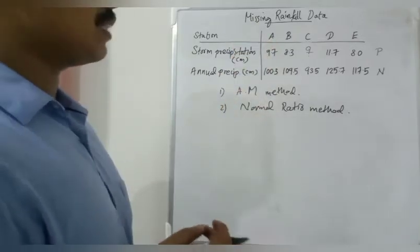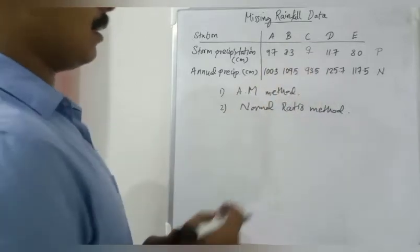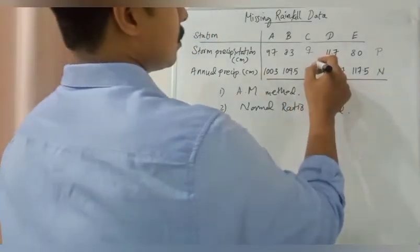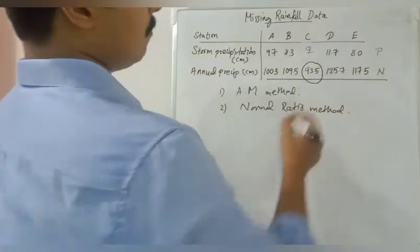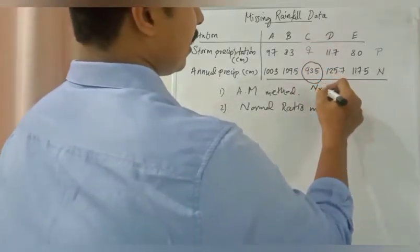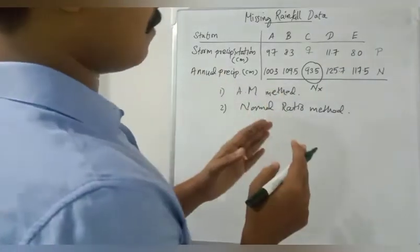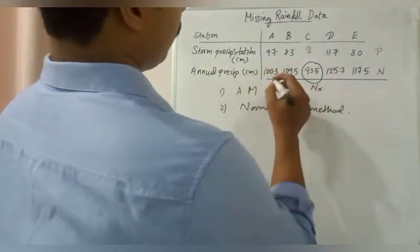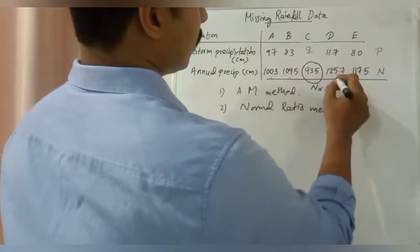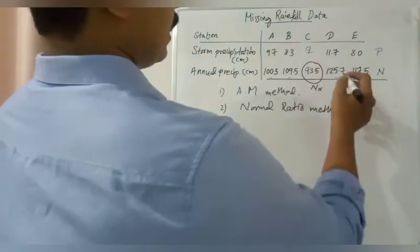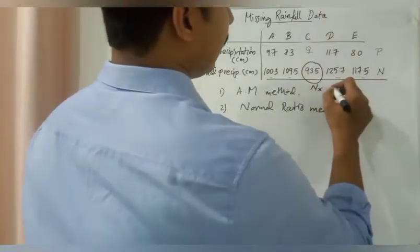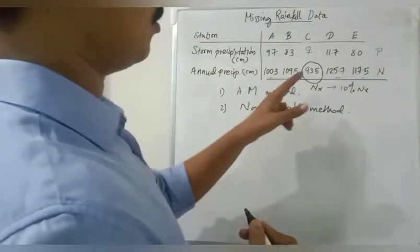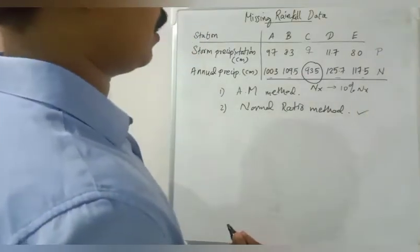There are two methods. You have to decide which method you are adopting. To decide on the method you are adopting to find the missing rainfall data Pc, you should consider these N values. This annual rainfall data of missing rainfall station is denoted by Nx. If you listen carefully, this is the main point: if all the other annual rainfall data (these four values), any of these values, if exceeding 10 percentage of Nx, you have to adopt second method.